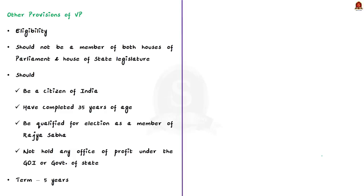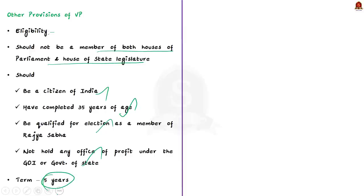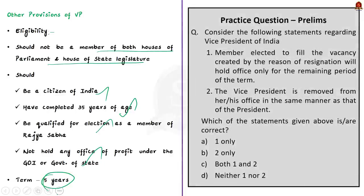Coming back to vice president election: the vice president shall not be a member of either house of parliament or of the legislature of any state, and if he is a member, he should vacate his seat on the date he enters office. The eligibility criteria includes being a citizen of India, having completed the age of 35 years, being qualified for election as a member of the Council of States, and not holding any office of profit under the government of India, any state, or any local authority. The vice president is elected for a period of five years. Also go and read about the removal and resignation process of vice president to complete this topic holistically.